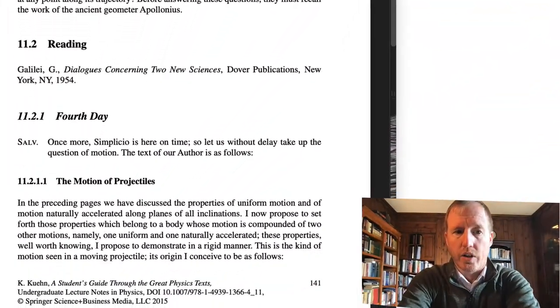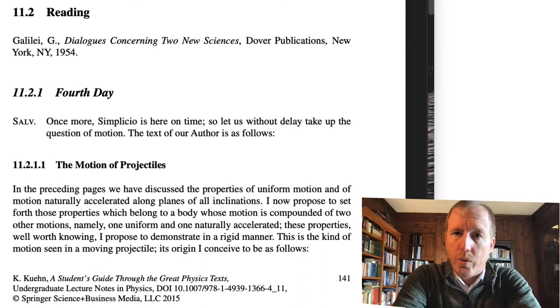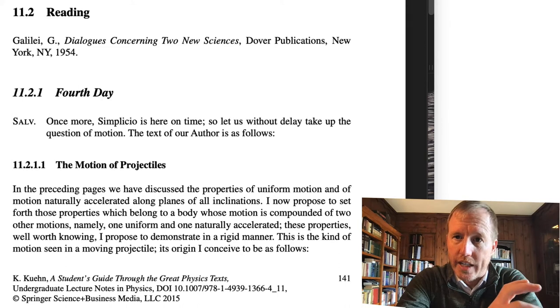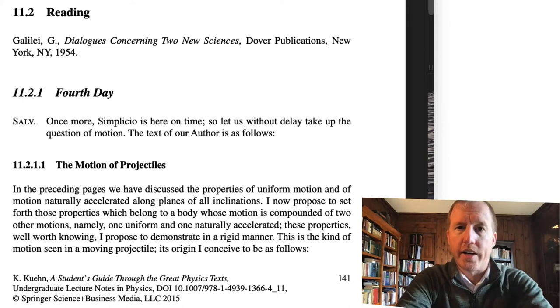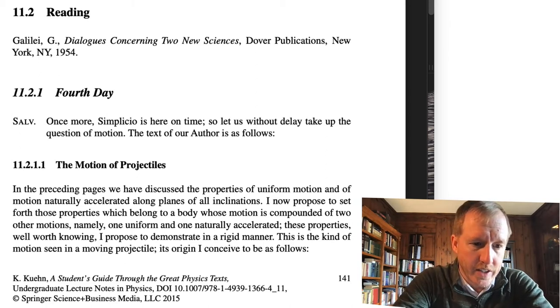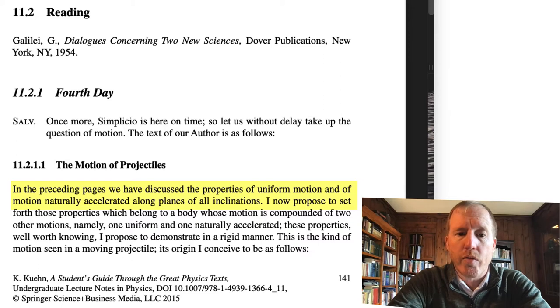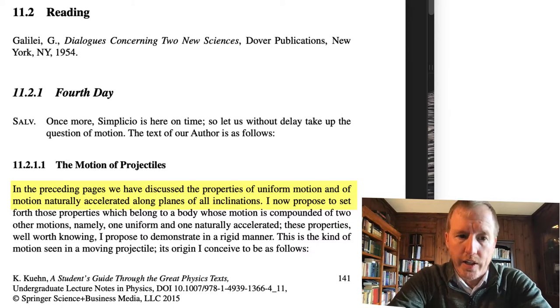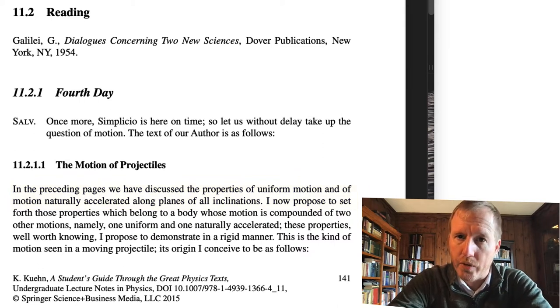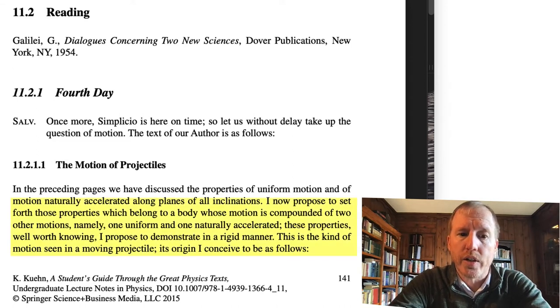I'm going to begin by reading some selections from the bottom of page 141. This is the fourth day of the dialogues between Salviati, Segredo, and Simplicio. Salviati is reading a short section of the book they've been looking at, essentially reading from Galileo. He says: In the preceding pages we have discussed the properties of uniform motion and motion naturally accelerated along planes of all inclinations. I now propose to set forth those properties which belong to a body whose motion is compounded of two other motions, namely one uniform and one naturally accelerated. These properties, well worth knowing, I propose to demonstrate in a rigid manner.